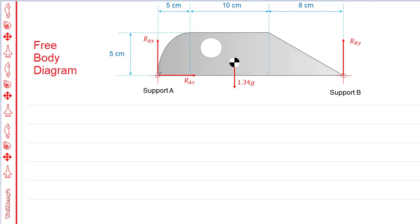Support A is a fixed support, so the object cannot move in X or Y at point A. It's completely fixed. Because it's completely fixed and it can't move in any direction, there must be a reaction force in each direction, one in X, one in Y. You always get two reaction forces at a fixed joint.